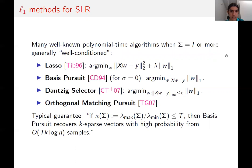The typical guarantee for basis pursuit, or any of these algorithms, is: if the condition number of sigma is bounded, then we can recover k-sparse vectors with high probability from k log n samples, and the sample complexity scales in the condition number. There are some results that improve upon this and provide weaker bounds than the condition number, but they're all of this flavor.